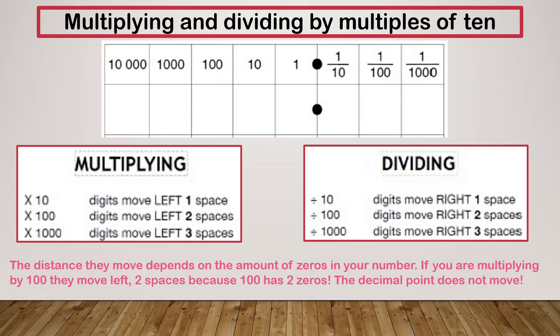So when we're multiplying, our digits are moving to the left, so our digits are getting bigger, and how much bigger they're getting depends on what we're multiplying by. So multiplying by 10, digits move left 1 space. By 100, it's 2 spaces, and by 1000, it's 3 spaces.